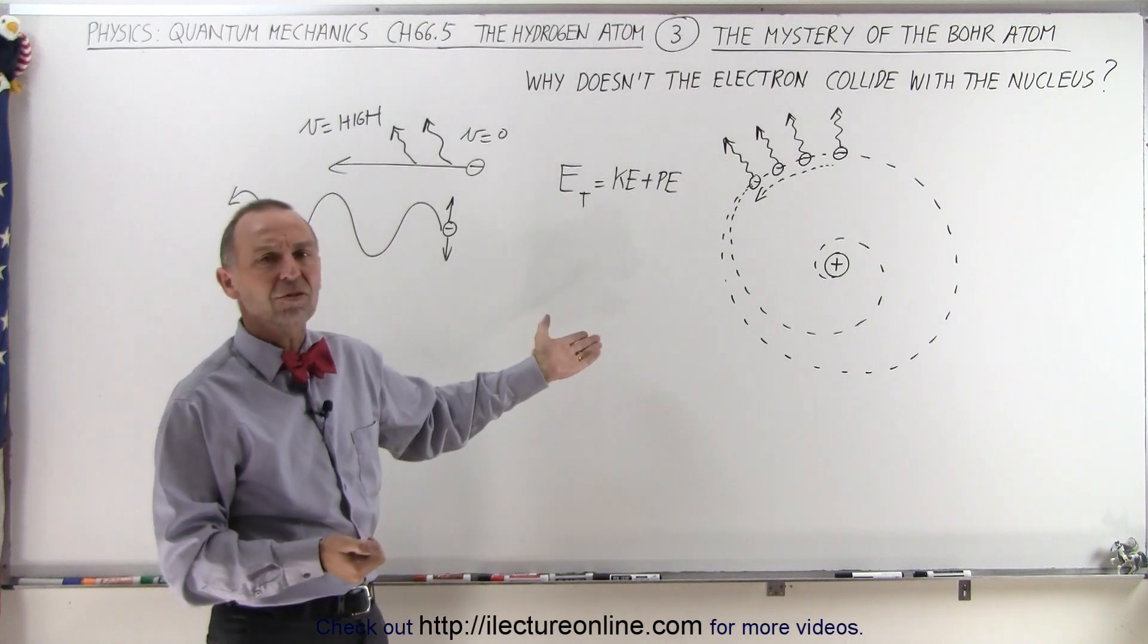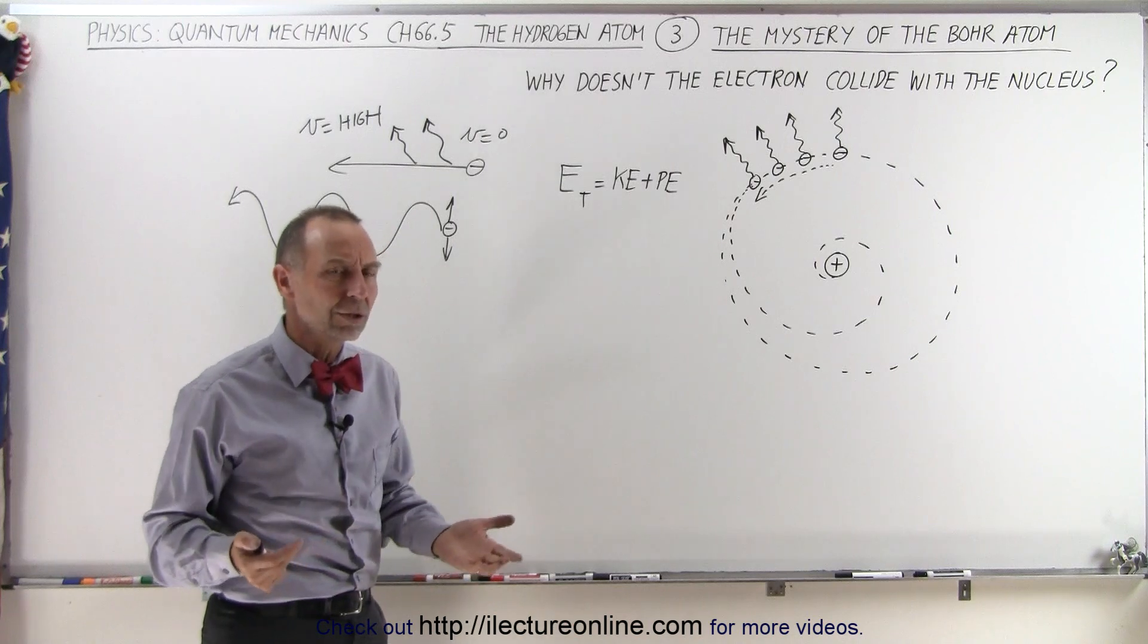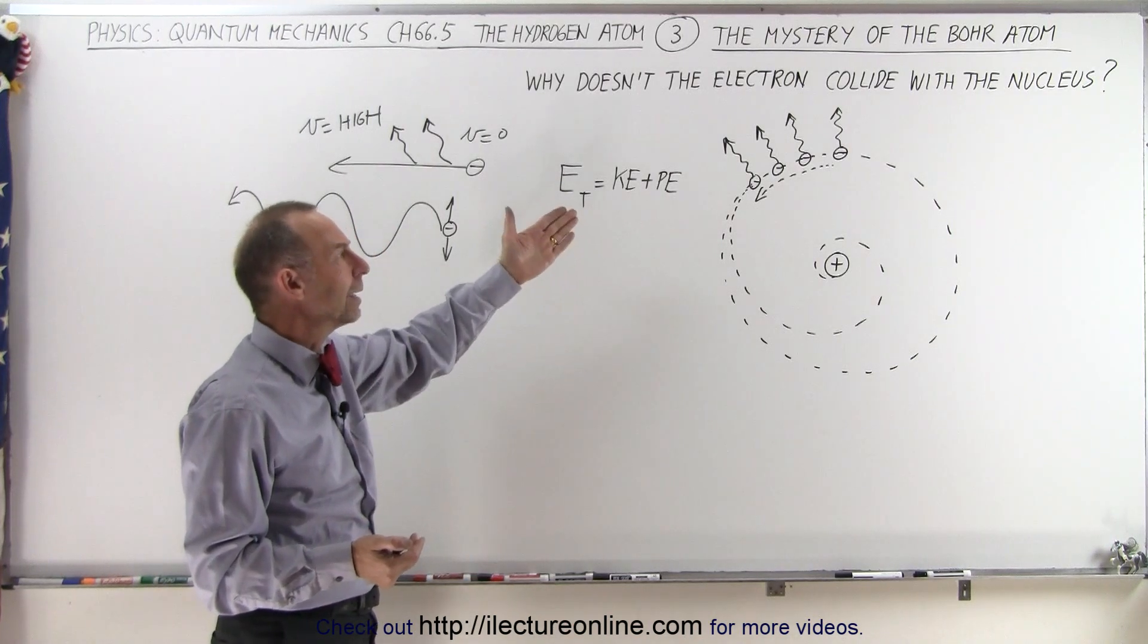Of course, that's not the case. The universe is still there. Electrons still seem to be zipping around the nucleus everywhere we look. So why is this not happening?